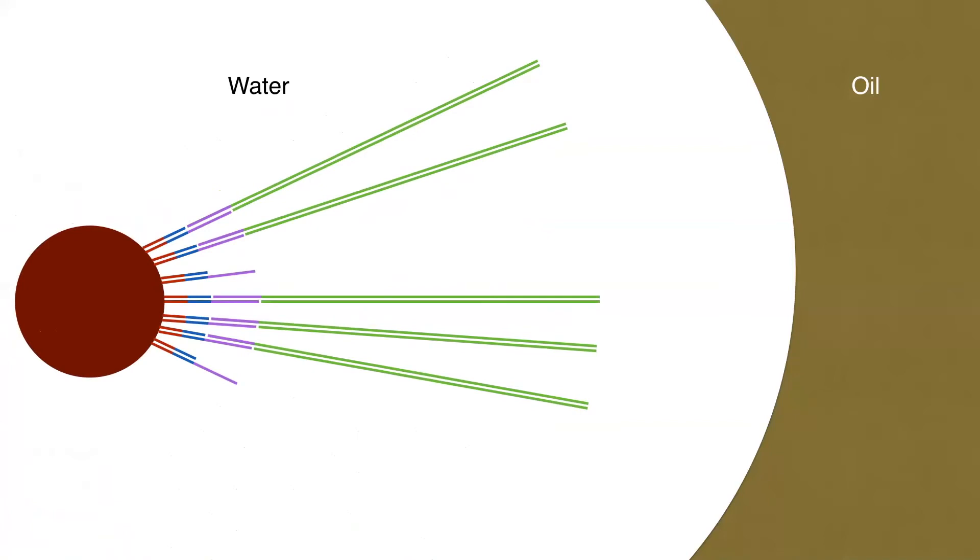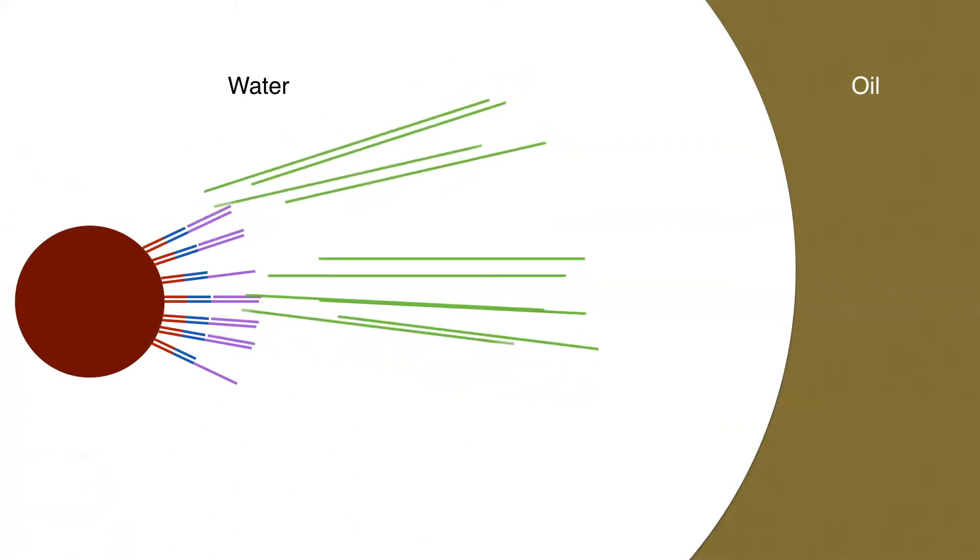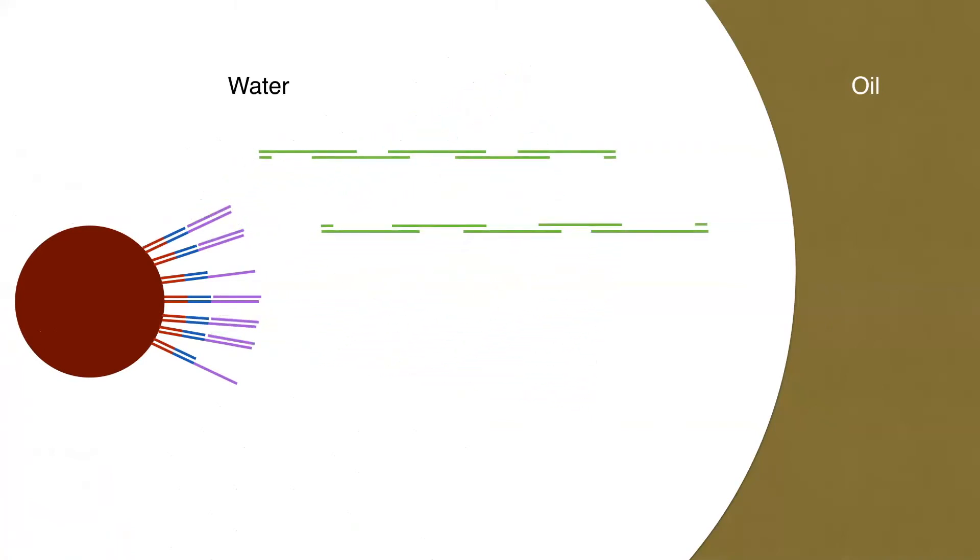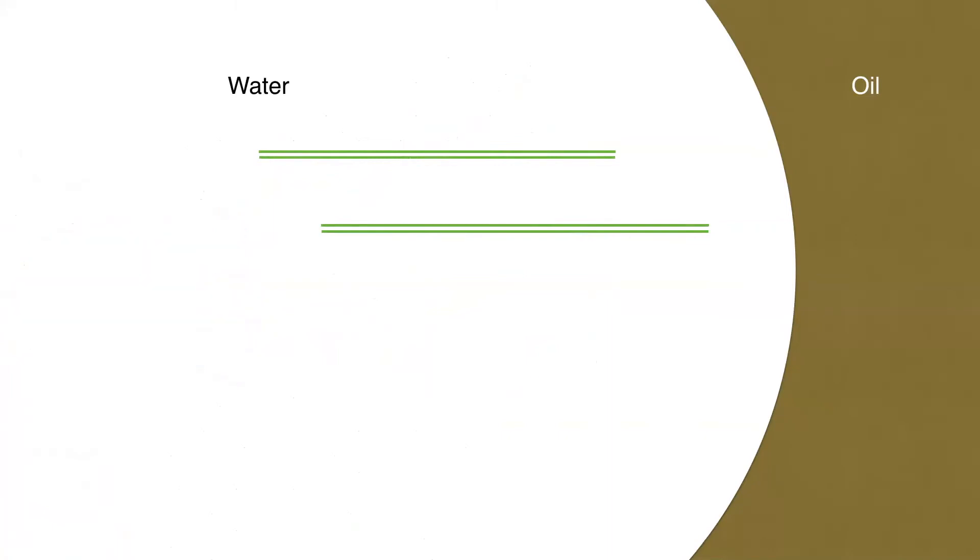Once they're inside the beads, we use a temperature-sensitive restriction enzyme to basically cleave the payloads off the surface, and we do a PCA within each of the droplets to essentially synthesize or assemble our entire gene. This is done in parallel in millions of droplets simultaneously.